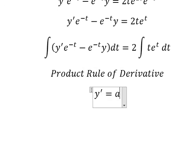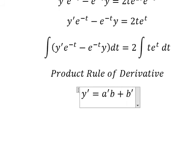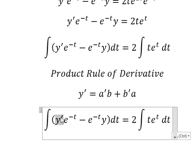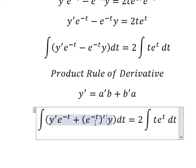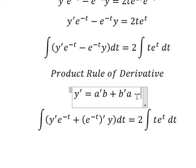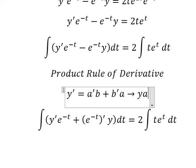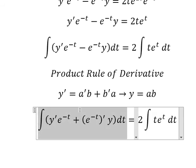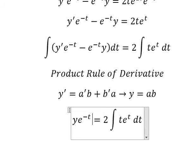We apply the product rule for derivatives: the derivative of y equals the derivative of A times B, plus the derivative of B times A. So the left side is the derivative of y·e^(−t), and integrating both sides gives us y·e^(negative t).